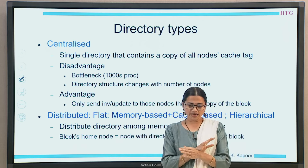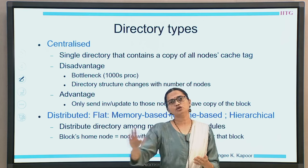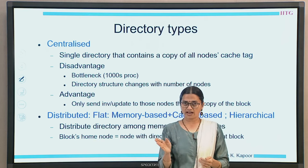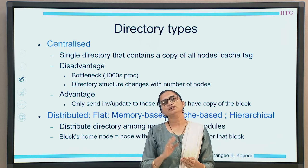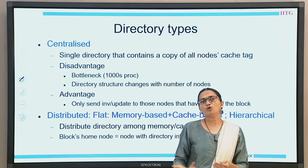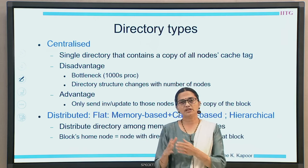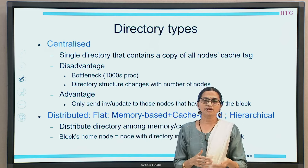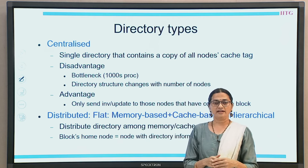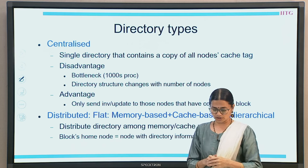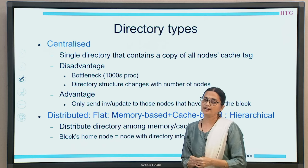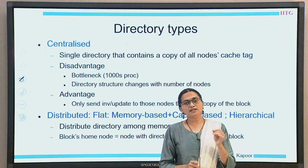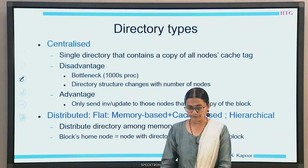In distributed, the information is distributed across the nodes and especially associated with the memory, because every node is associated with a memory bank and this memory bank can house information about the sharers - that is the memory-based flat structure. Then we have a cache-based design where individual caches store the information, and the third type of distribution is hierarchical.